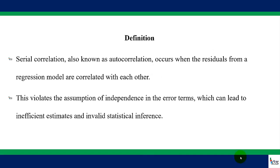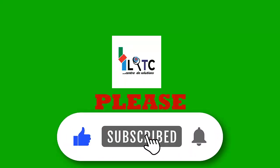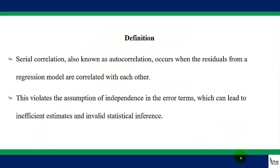Now, what is serial correlation? Please take note that serial correlation is one of the key assumptions of the classical linear regression model. This assumption states that the residuals or the errors from a regression model are not correlated with each other. So when the errors are correlated with each other, we say there is a problem of autocorrelation or serial correlation. When serial correlation occurs, there is a higher chance that the estimates will be biased and the statistical inference will not be valid.